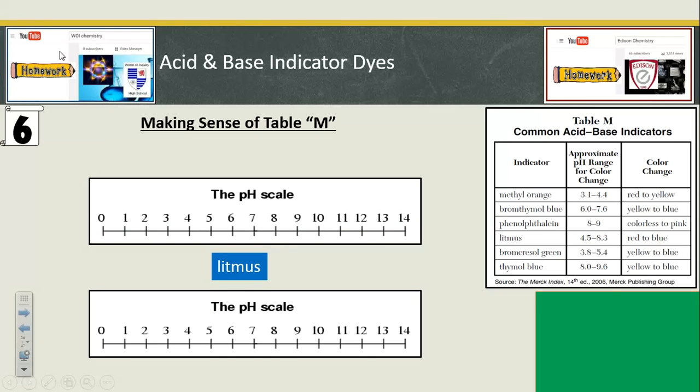Litmus. This is where I saw litmus paper earlier on. But litmus can come as a solution as well. Below pH 4.5, it's red. So, it's red in an acid. And above pH 8.3, it's blue. Blue in a base. Litmus.